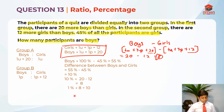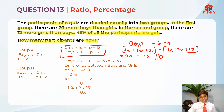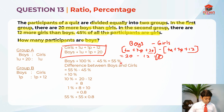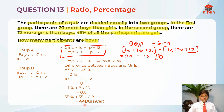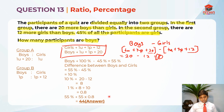Now we can find 1%. So 1% refers to 8 divided by 10, because 8 is 10%. So 1% equals 0.8. Now we should find 55% of the boys. 55% is 55 times 0.8, which is 44. So there are 44 boys in total — a whole number of actual participants.